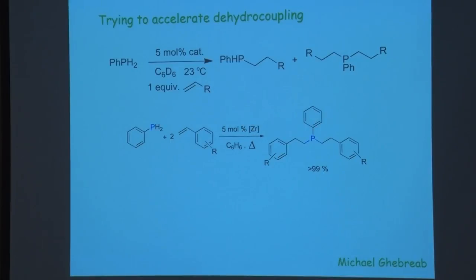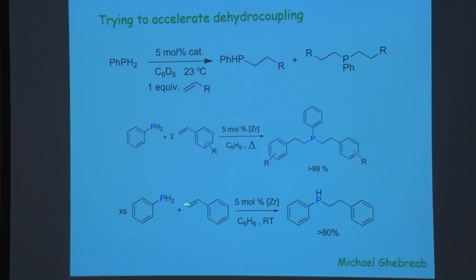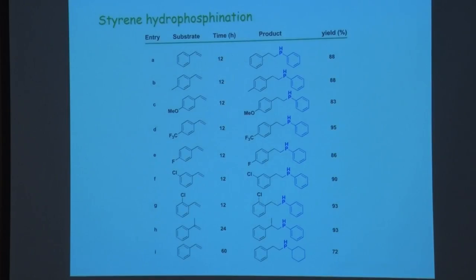The tertiary phosphine product — where two P-H addition steps have occurred, giving three organic substituents — is actually easier to make: push the reaction forward, add excess olefin, heat, wait, and you can convert everything to the tertiary phosphine. We did a lot of work with styrene derivatives to start. The real question was whether we could selectively make the secondary product — the one with two organic substituents — which is of more interest for additional chemistry. Mike succeeded in about 80% isolated yield.